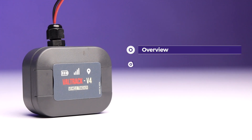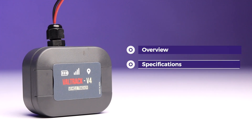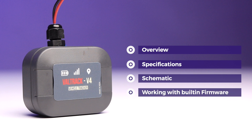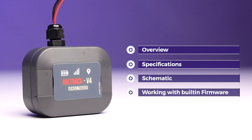I've decided to divide this whole thing into two different videos. In this video I'll be talking about everything starting from the overview and its specifications, then the schematic of this product, and in the end I'll show you how to use this product to track location in real time using Veletron's mobile application without programming. This is an all-new 4G GPS tracker completely made in India. Let's get started.